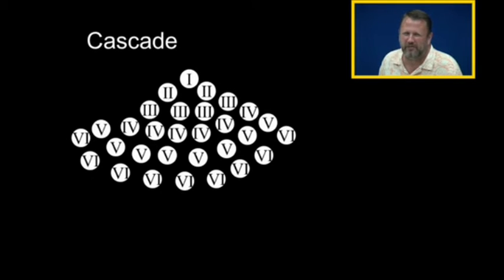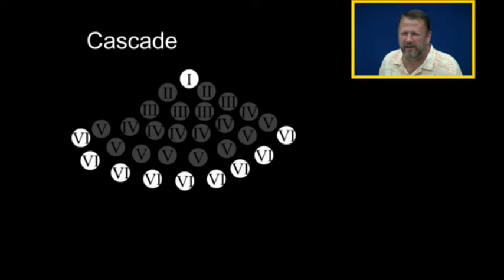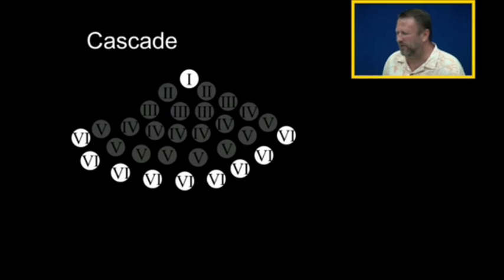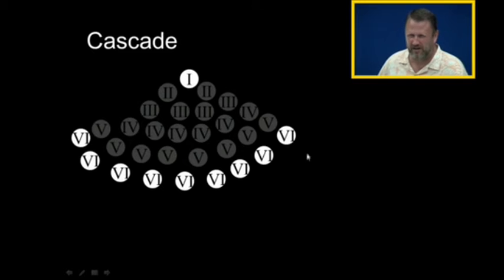What I wanted you to see from a cascade is: by activating protein one, we've activated lots and lots and lots of protein six. That's what's going on with a cascade — when we activate this, then we've activated lots and lots of that.